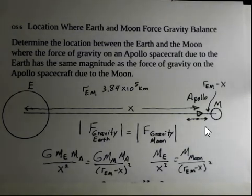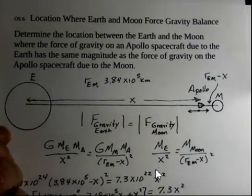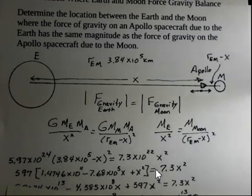So now we can simplify in the next step here. Capital G is the same on both sides. It's a constant. The mass of the Apollo spacecraft is the same on both sides. So I've removed those. Let's put in some numbers and see how we start to analyze this situation. When I put in the numbers, I am also cross multiplying.